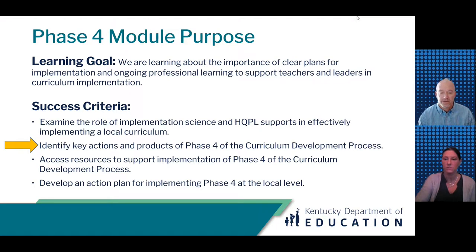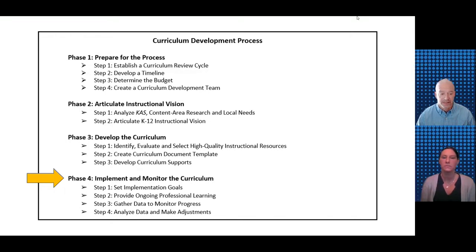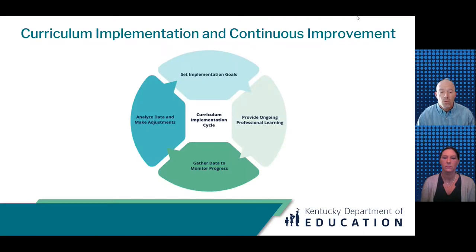Let's move into our second success criterion: identify key actions and products of Phase 4 of the CDP. Phase 4 focuses on curriculum implementation and monitoring. The four steps of this phase include setting implementation goals, providing ongoing professional learning, gathering data to monitor progress, and analyzing data and making necessary adjustments. Curriculum implementation is a multi-year process and it can take three-plus years to get to the point of sustainability. Phase 4 is grounded in a continuous improvement cycle that you move through each year of implementation.